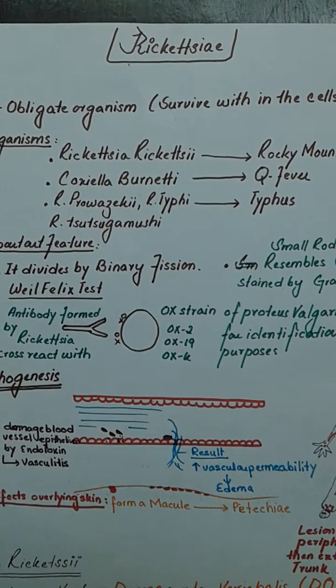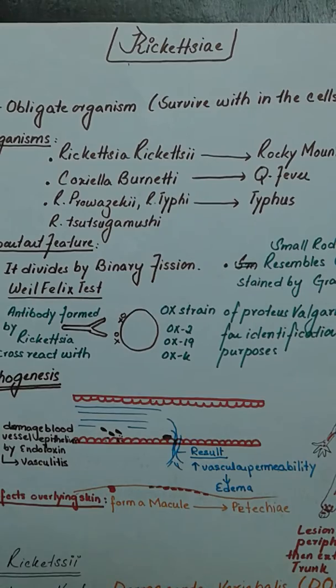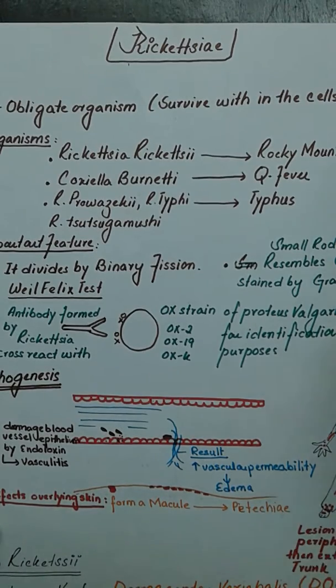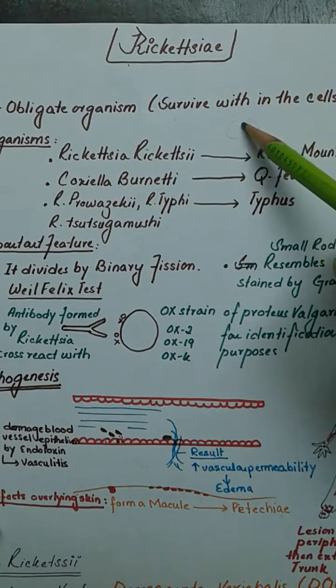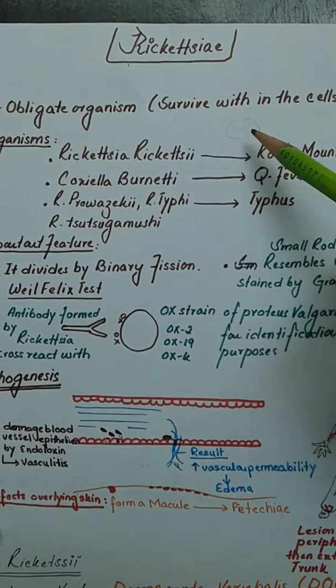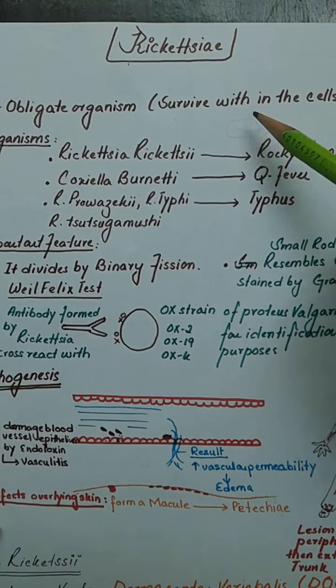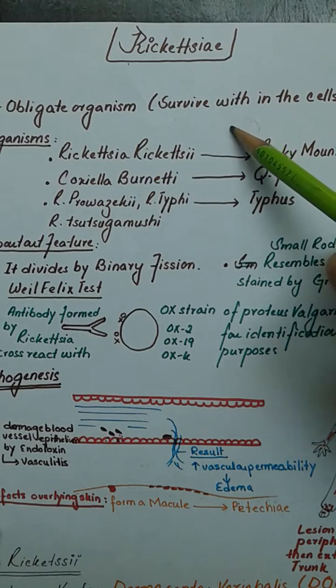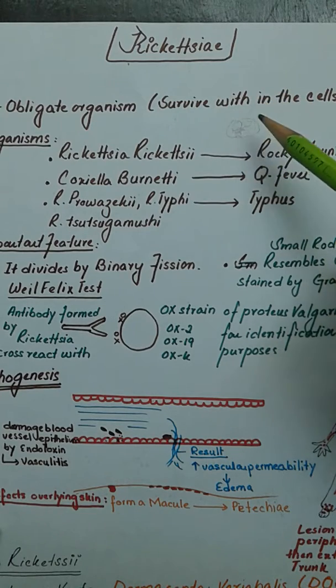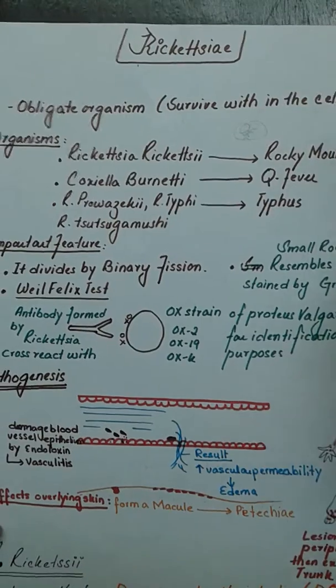Rickettsia is an obligate organism, meaning that it can survive only within cells. It cannot survive outside the cell because it needs a cell in order to generate energy, to replicate, and to cause disease. This organism lives like a king inside a cell.